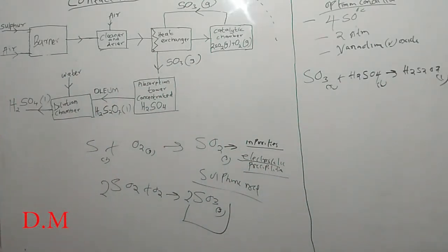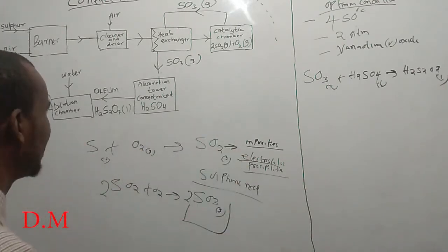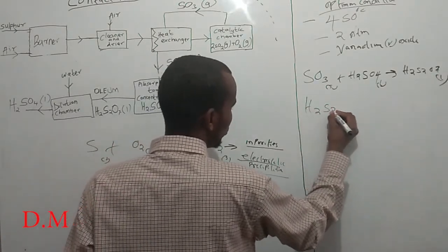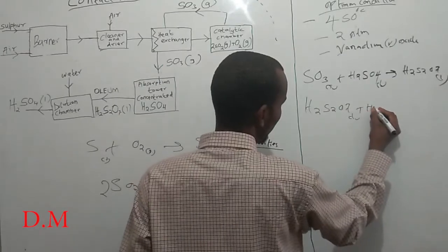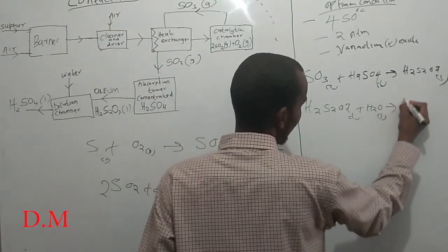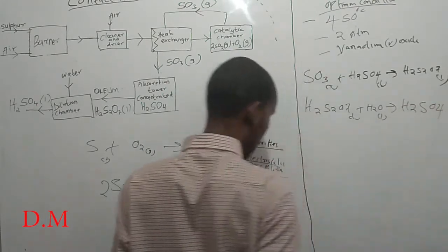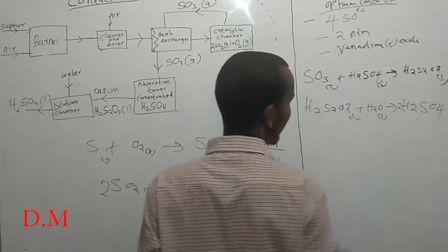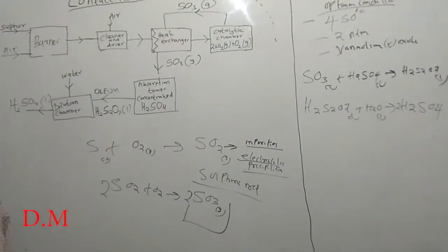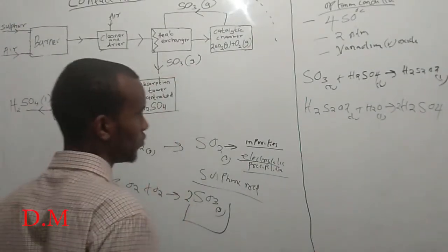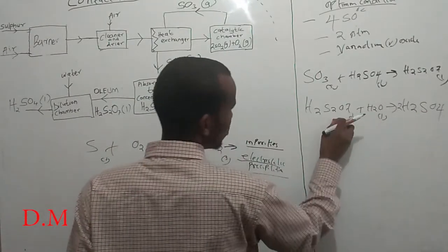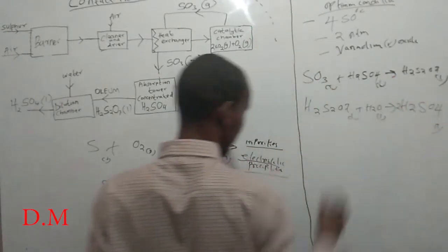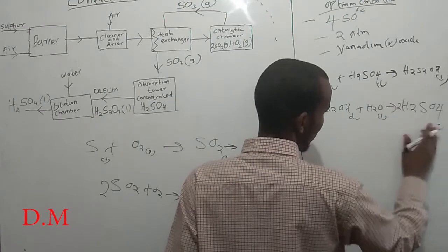To obtain sulfuric acid, the oleum formed is then diluted in water. H2S2O7 liquid reacts with water to give sulfuric acid, H2SO4. Balancing: 4 hydrogen, 2 sulfur, and 7 plus 1 equals 8 oxygen on the left; 4 times 2 equals 8 oxygen on the right. The equation is balanced. This is the reaction producing sulfuric acid in the contact process.